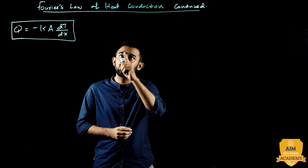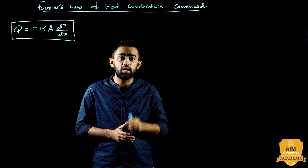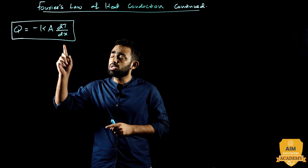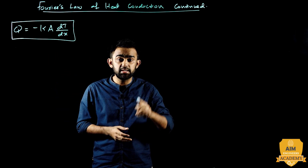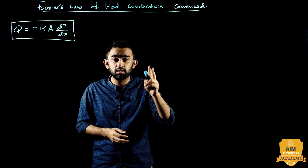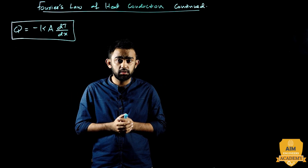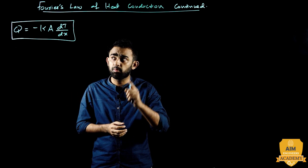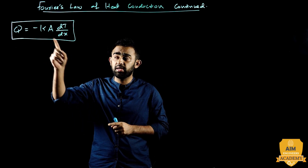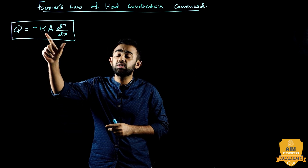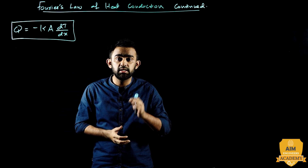First, we have Fourier's law of heat conduction equation developed. That equation is: Q is equal to minus K dT by dx. Two points to address: one, why this negative sign? Second, what is the physical significance of thermal conductivity K?